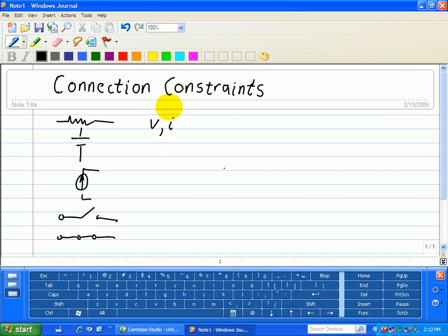These conditions are called connection constraints because they are based only on the circuit connections and not on the specific devices in the circuit.